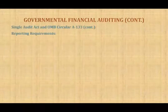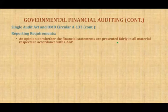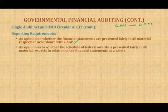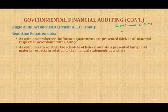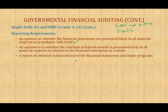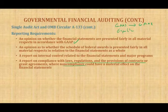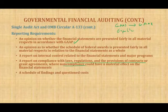What do we need to report under the Single Audit Act? First, an opinion on whether the financial statements are presented in accordance with GAAP. Second, an opinion on whether the schedule of federal awards is presented fairly in relation to the financial statements as a whole. Third, a report on internal control related to the financial statements and major programs. Fourth, a report on compliance with laws, regulations, and provisions of contracts or grant agreements where non-compliance could have a material effect on the financial statements. Also, a schedule of findings and questioned costs, if any.